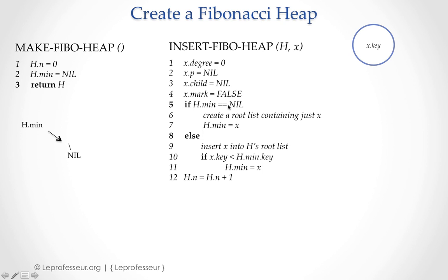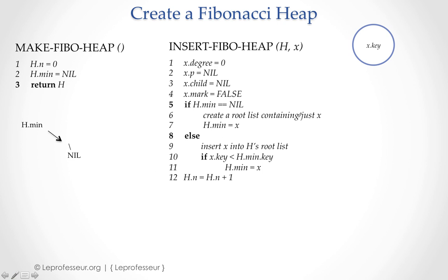Lines five through seven make a decision: if the heap H's min is nil — meaning there is no element in the heap — it's a simple job. We just create this node x as a root, insert it into the root list, and set h.min to x. The root list uses left and right pointers. With just one element, we have a root list with a single node.